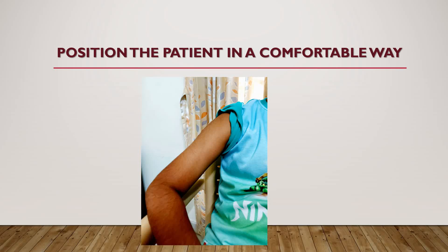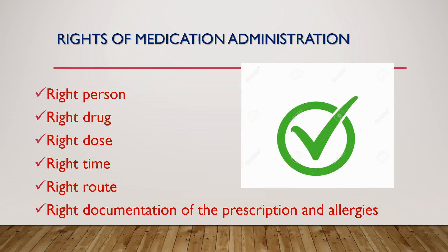The patient should be positioned comfortably. The normal position is a sitting posture for deltoid intramuscular injection. Before proceeding, check the rights of administration. For the right person, ask the patient to confirm their details and compare this to the prescription.